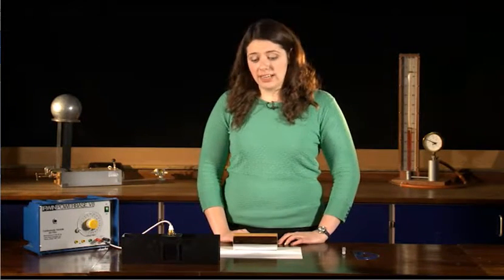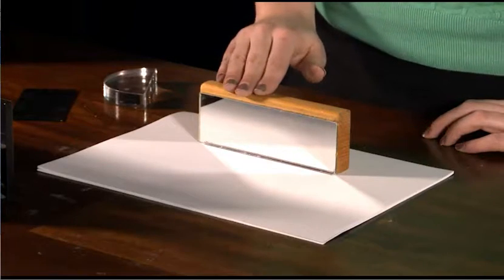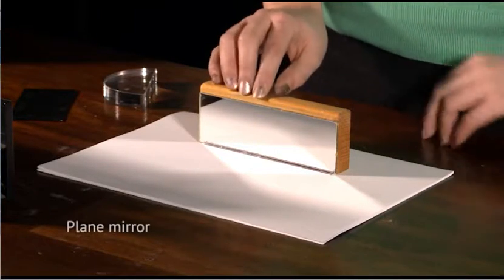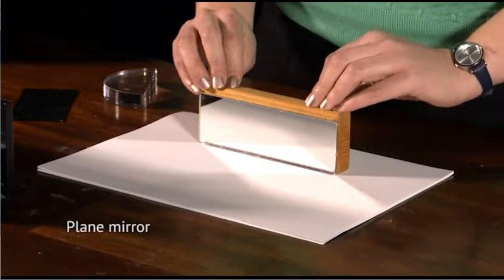To prove that's true today, we're going to draw a ray diagram of light hitting a plane mirror and bouncing back. A plane mirror is simply a flat mirror and a perfect reflector of light.